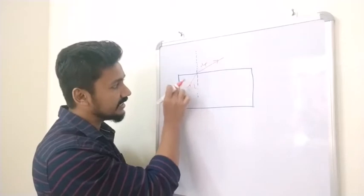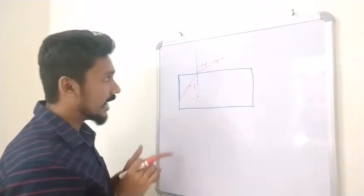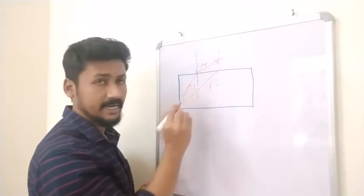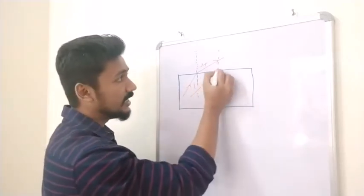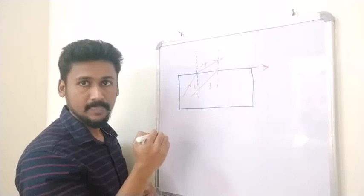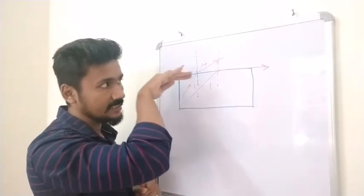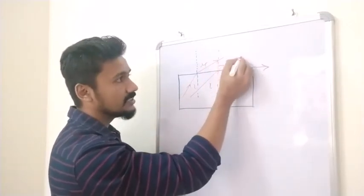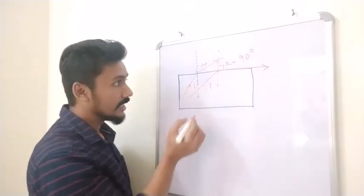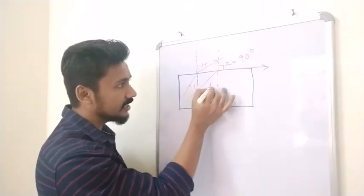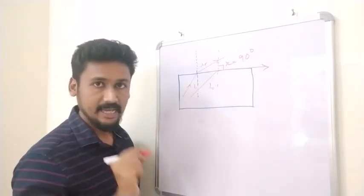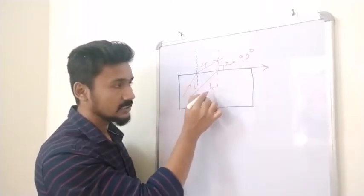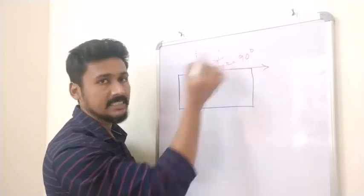If we keep increasing the angle of incidence, at a certain point the angle of refraction reaches exactly 90° — the refracted ray grazes the surface. This specific angle of incidence is called the critical angle, ic. The critical angle is defined as that angle of incidence for which the angle of refraction is 90°.